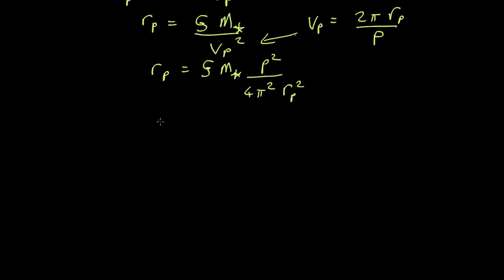So if we bring the r planet up to the side we end up with r planet cubed equals G m star period squared over 4 pi squared.